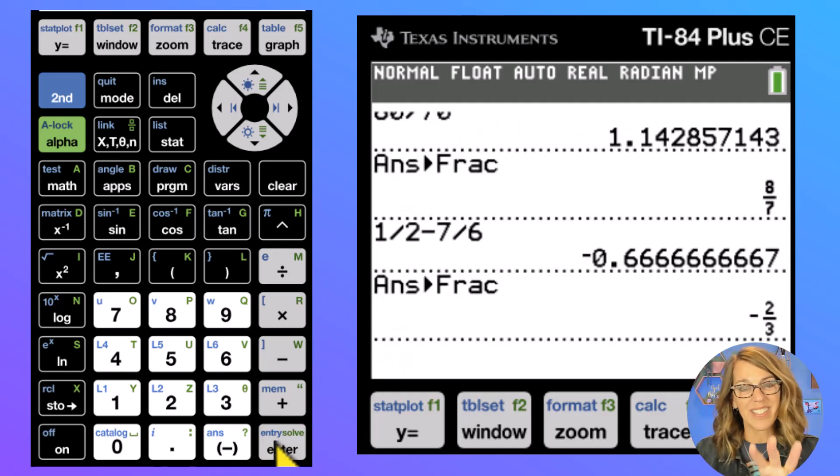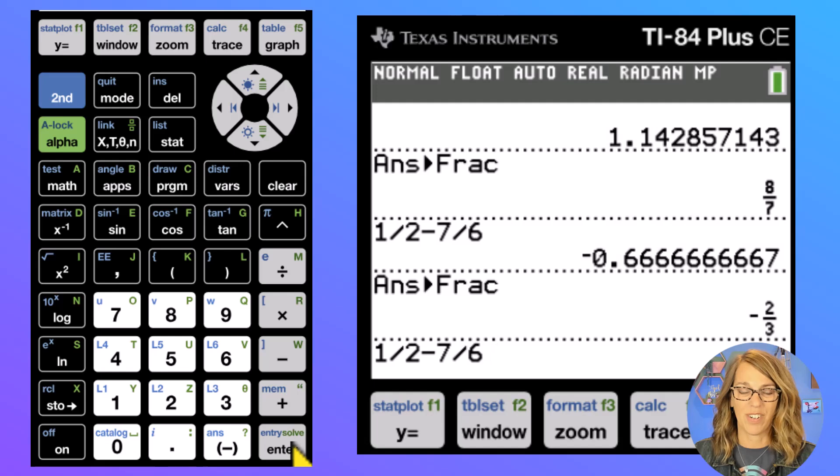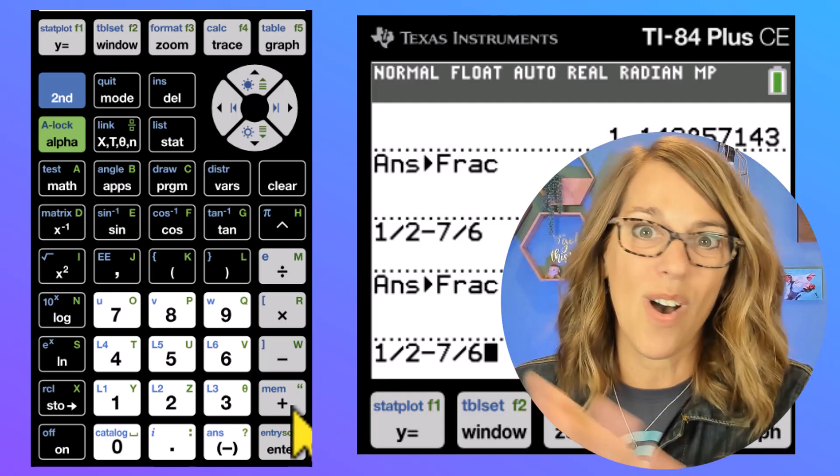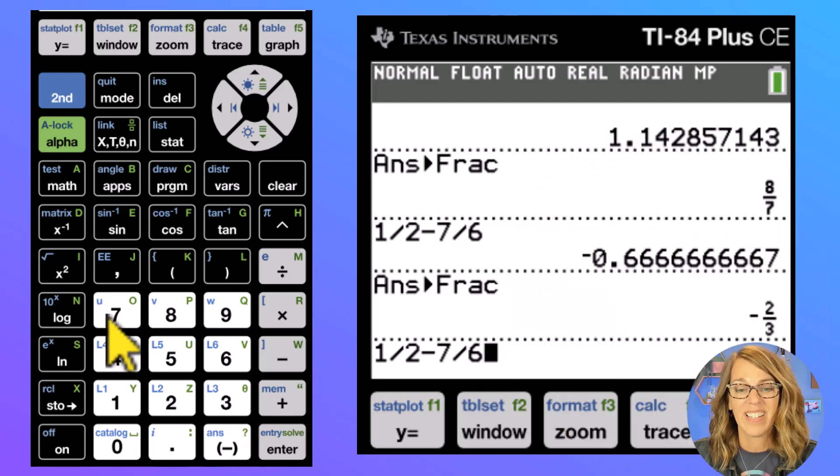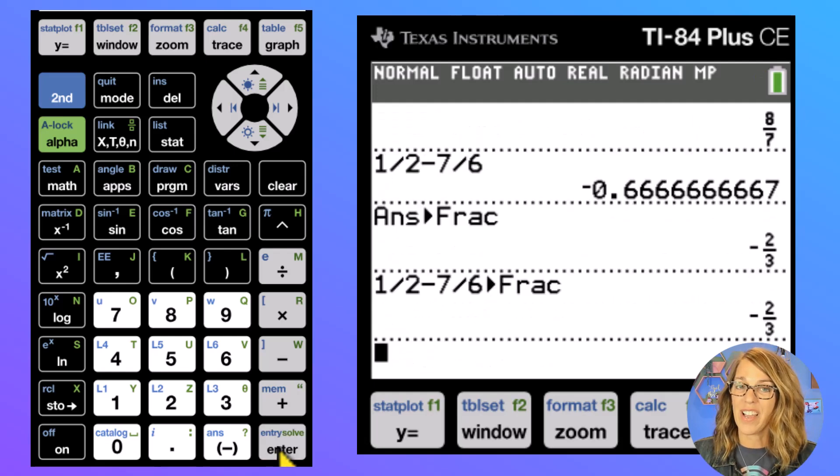But there's actually a simpler way. Let's navigate back up to that fraction subtraction. So if I hit my up arrow, I can go back through my options and then hit enter. But you can also just type this in, don't hit enter. What we're going to do is convert it to a fraction all in one step. Let's go to the math menu and then convert to fraction and then enter and it automatically gives me the negative two thirds.